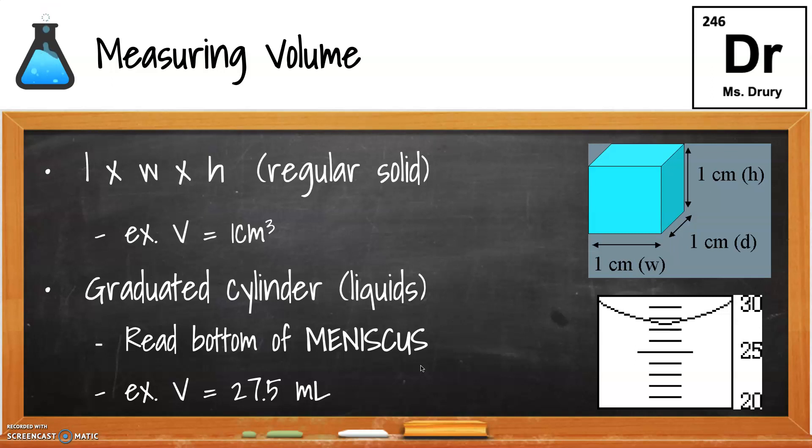Also, you can find it using a graduated cylinder like the picture on the bottom right, and you read the meniscus at the lowest point, and remember we measure one place beyond. So since you can see 25, 26, 27, and 28, and somewhere between 27 and 28, we write 27.5, so that should be a good review.